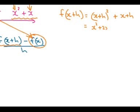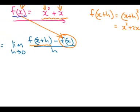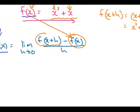And then I multiply the brackets out and I'll get x squared plus 2xh plus h squared plus x plus h. Nothing I can add there — but that is that part of the formula.